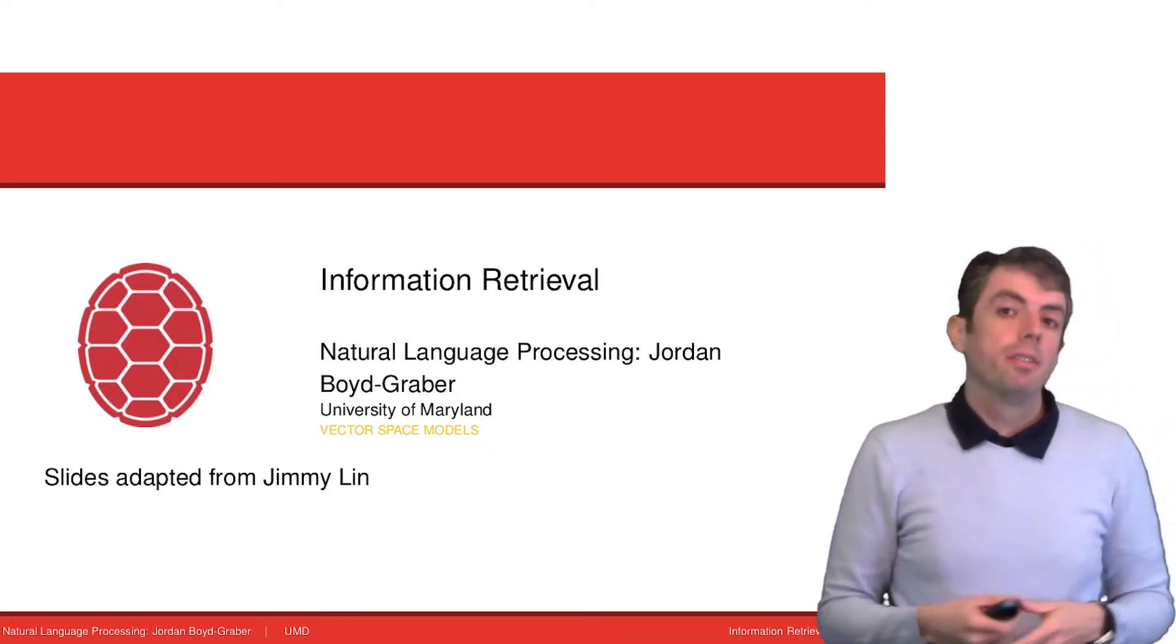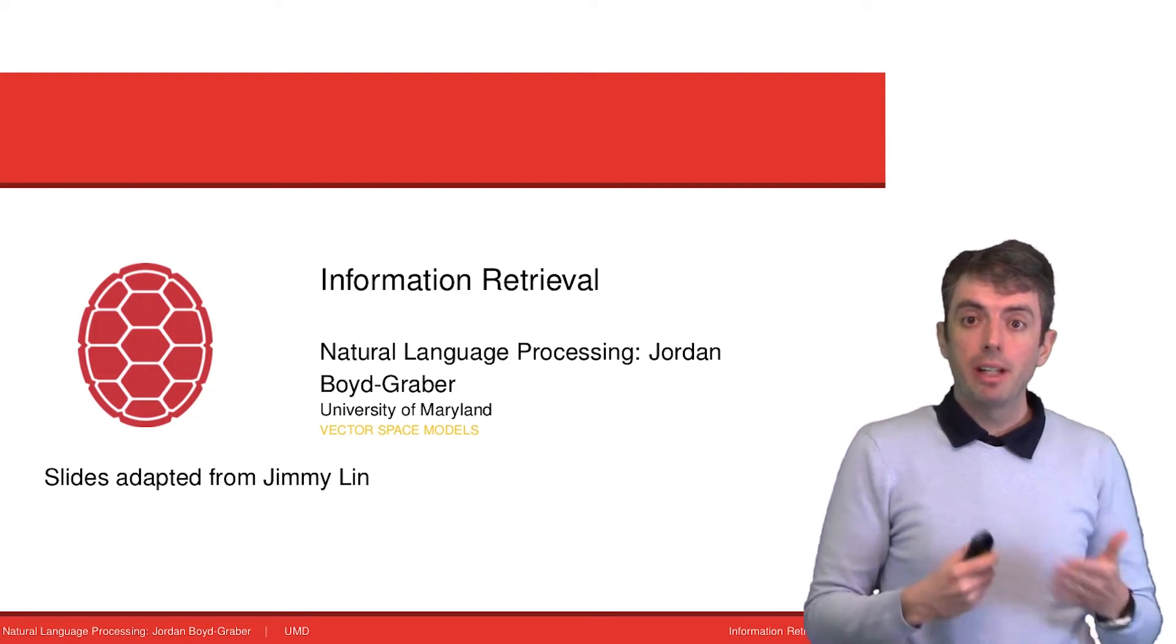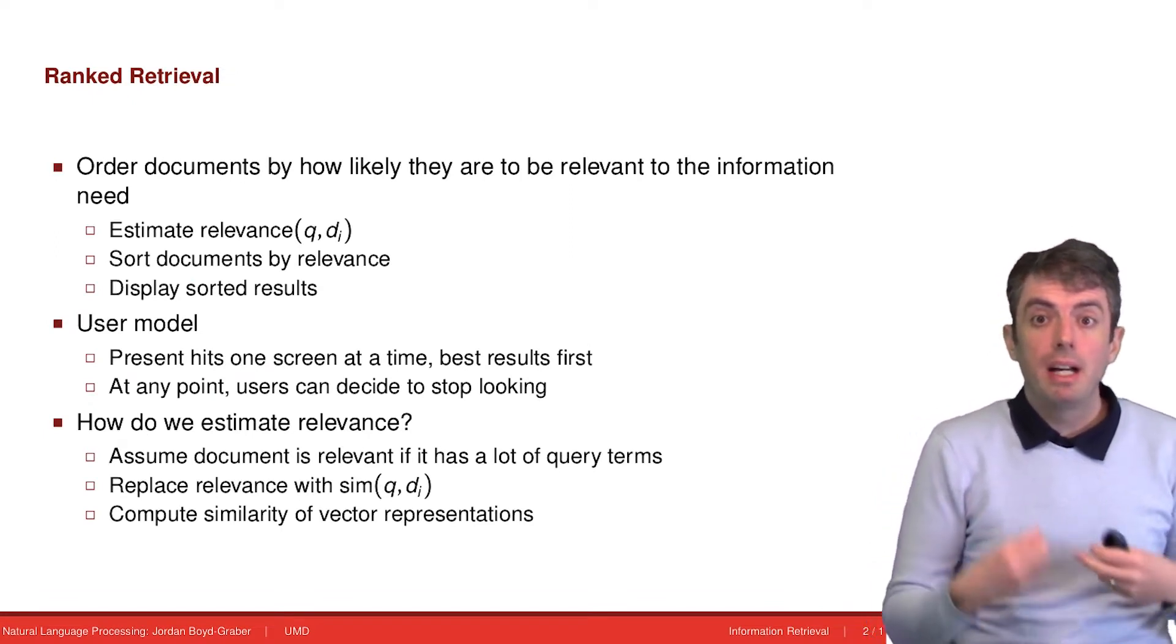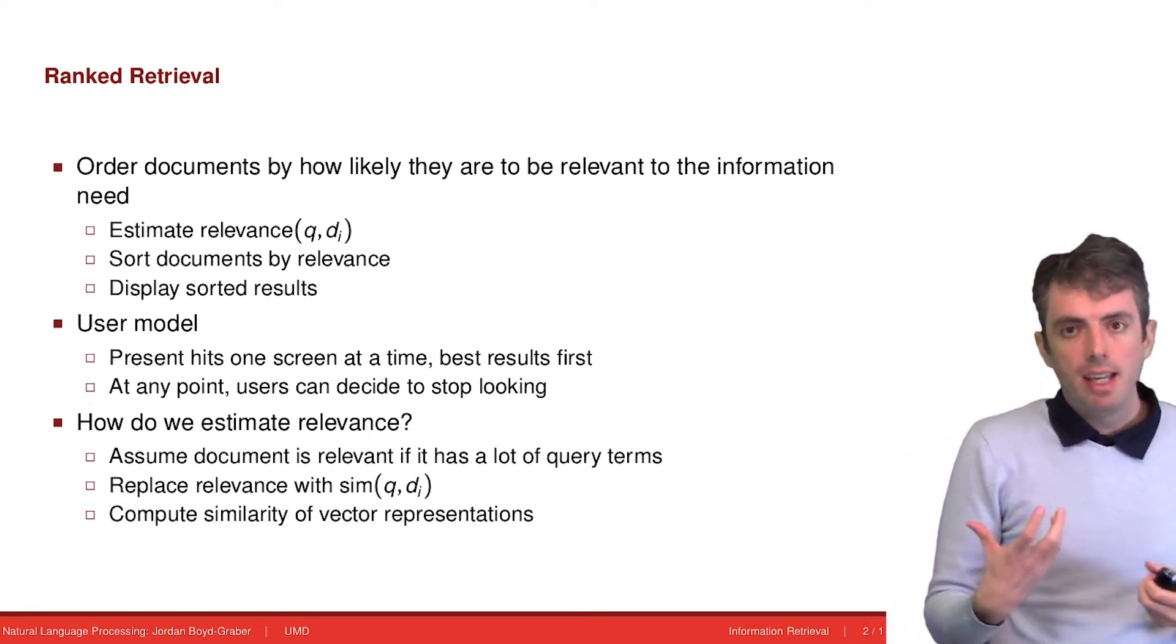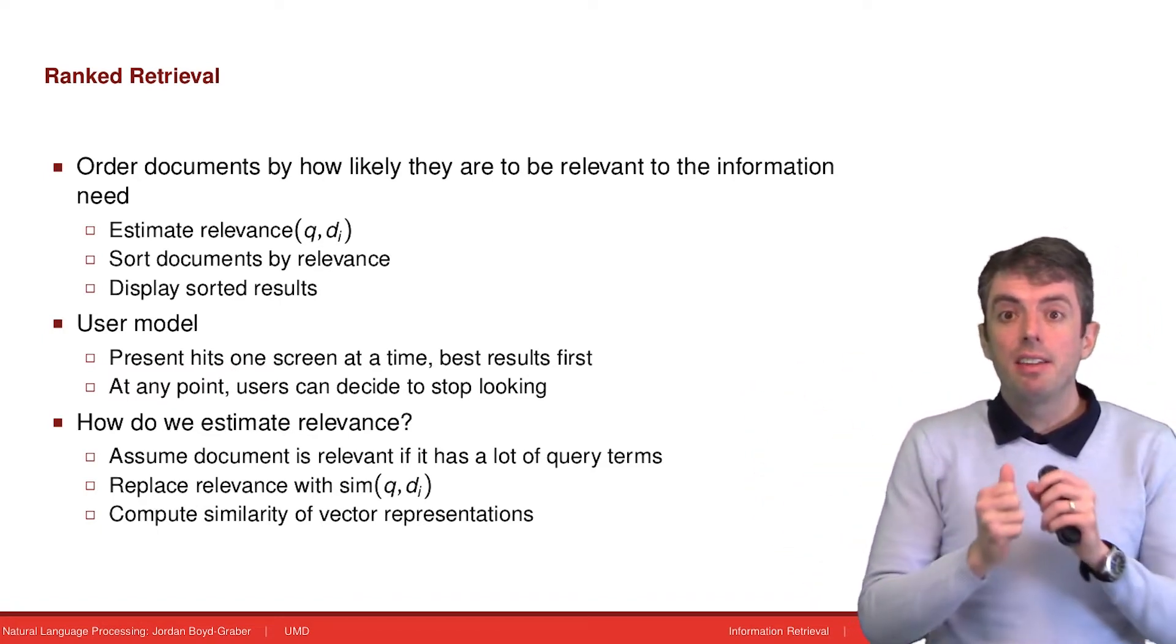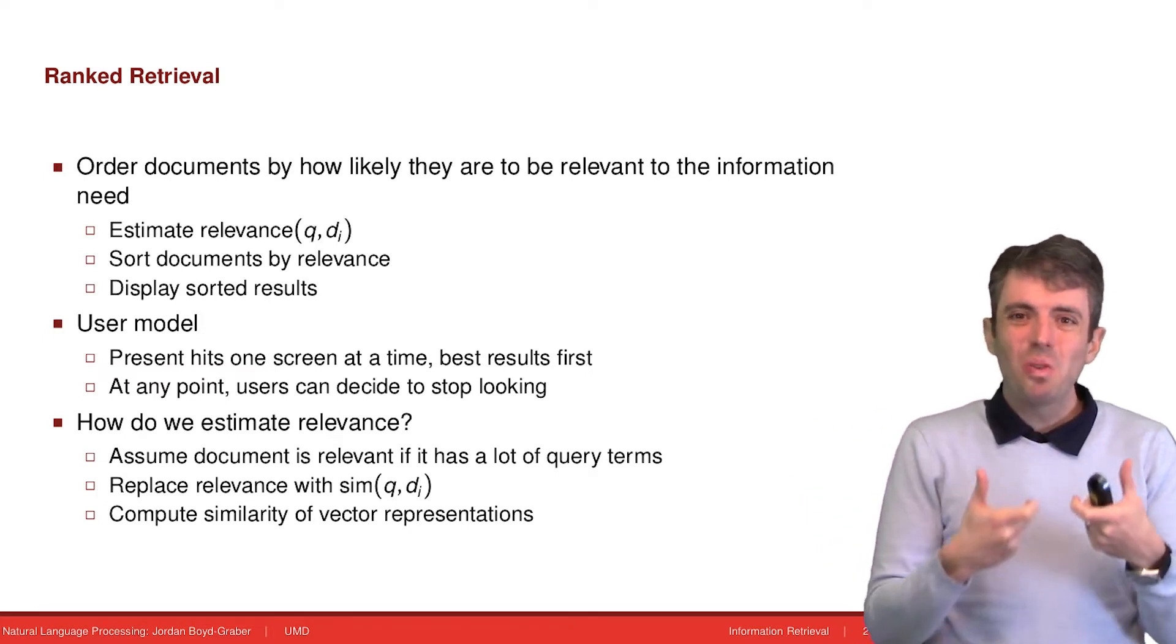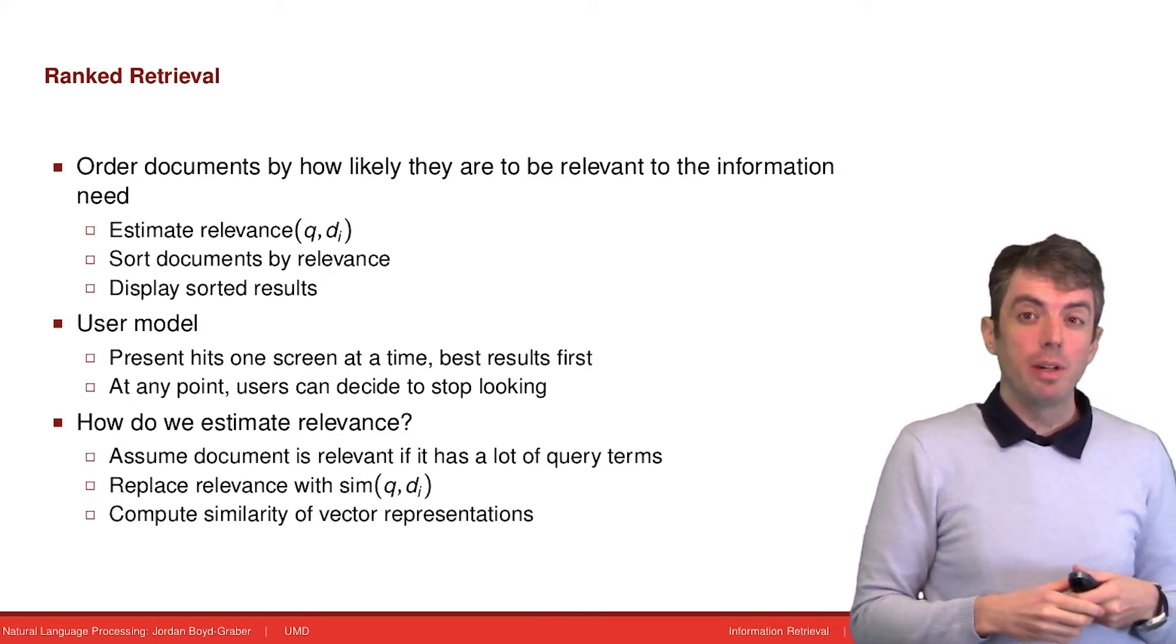We're going to continue our discussion of information retrieval and talk about ranked retrieval, particularly ranked retrieval using a technique called TF-IDF. The basic idea behind ranked retrieval is that we're going to have some function that takes the user's query and the documents and then allows you to compute a score for every document compared to the query, and how good does the computer think that it is at answering that query.